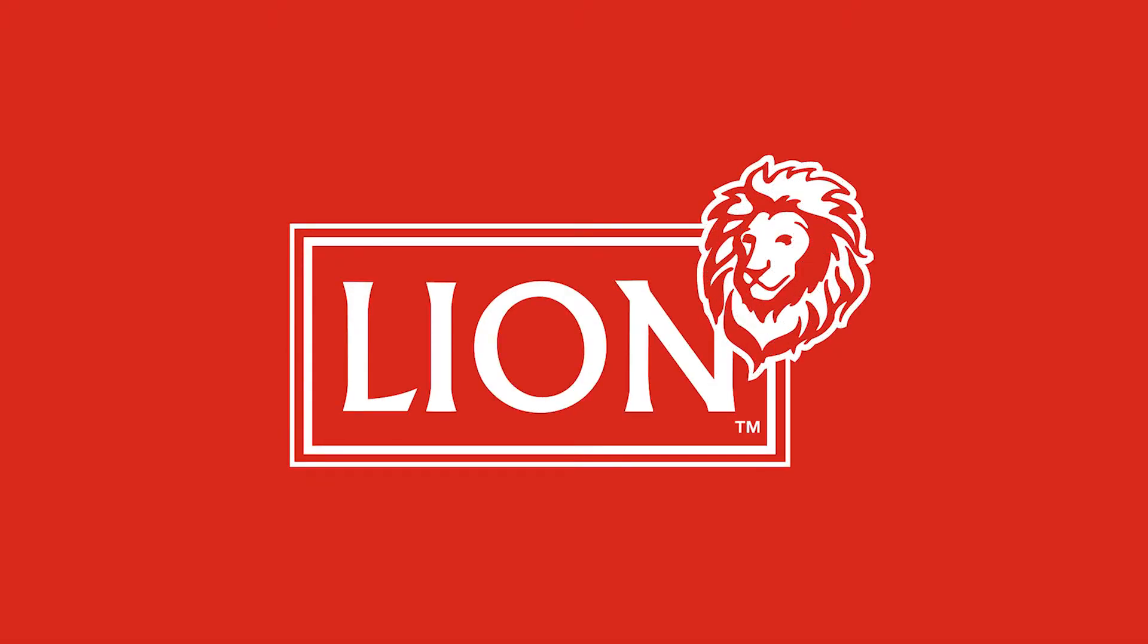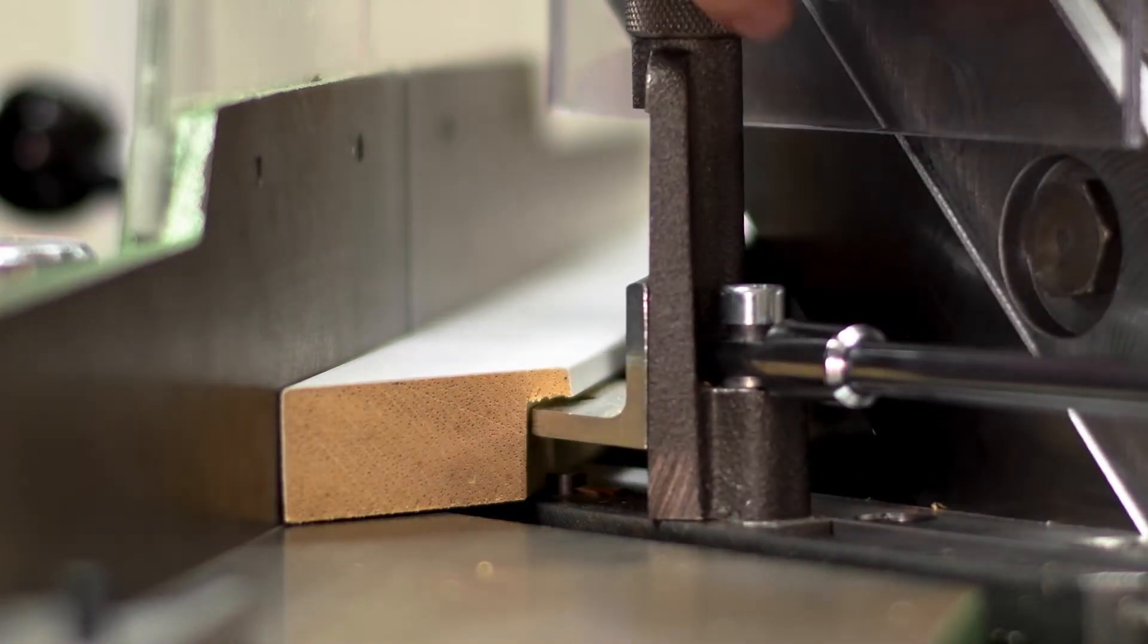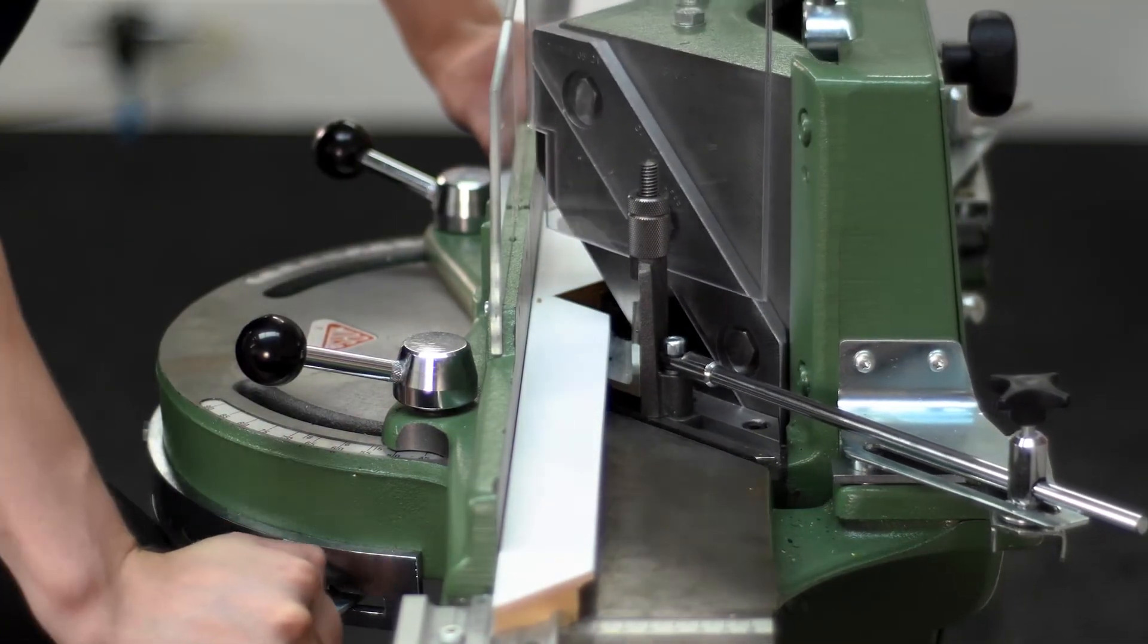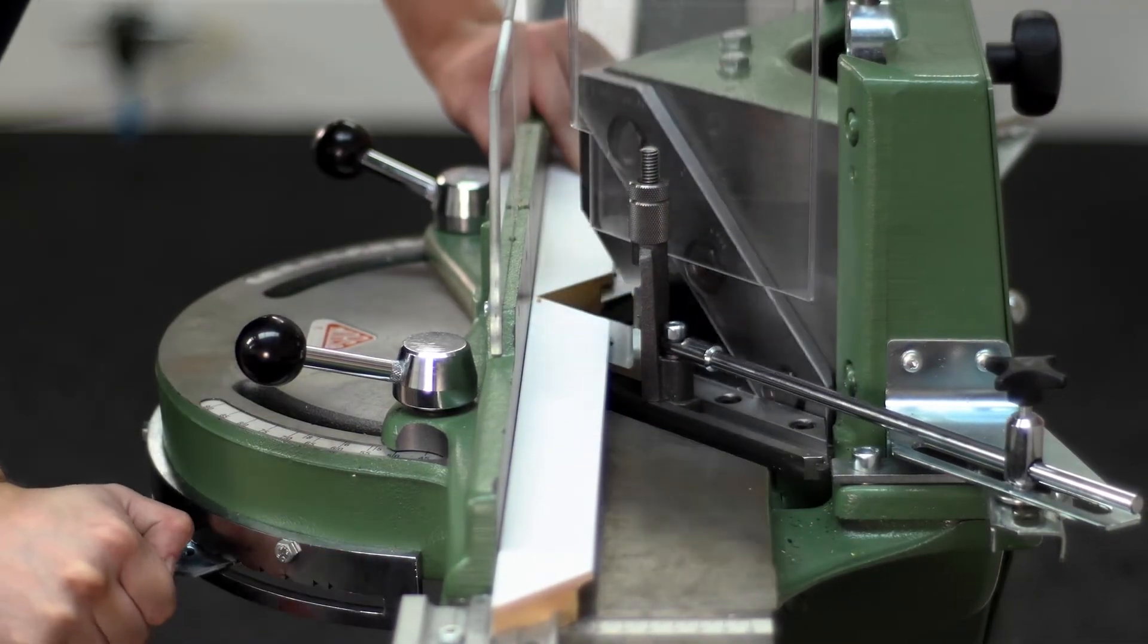Hi I'm Will and today we're going to use the AlfaMachine U200 underpinner to professionally join a frame. In a previous video we showed you how to cut mouldings using the Morseau guillotine. In this video we're going to show you how to join the same moulding using the U200.